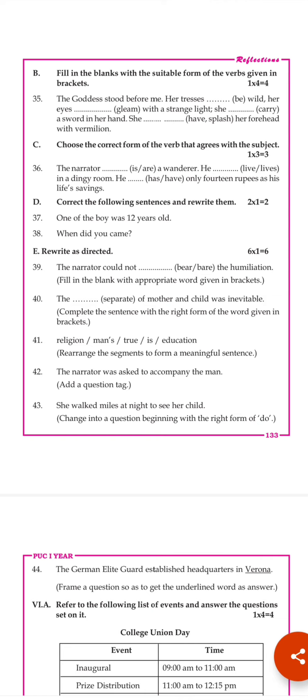Her eyes gleamed with a strange light. She 'carries' becomes 'carried' a sword in her hand. The helping verb 'have' becomes 'had' — she had 'splash' becomes 'splashed' — she had splashed her forehead with vermilion. The verbs to be used are given; our job is to use the appropriate suitable forms of the given verbs.